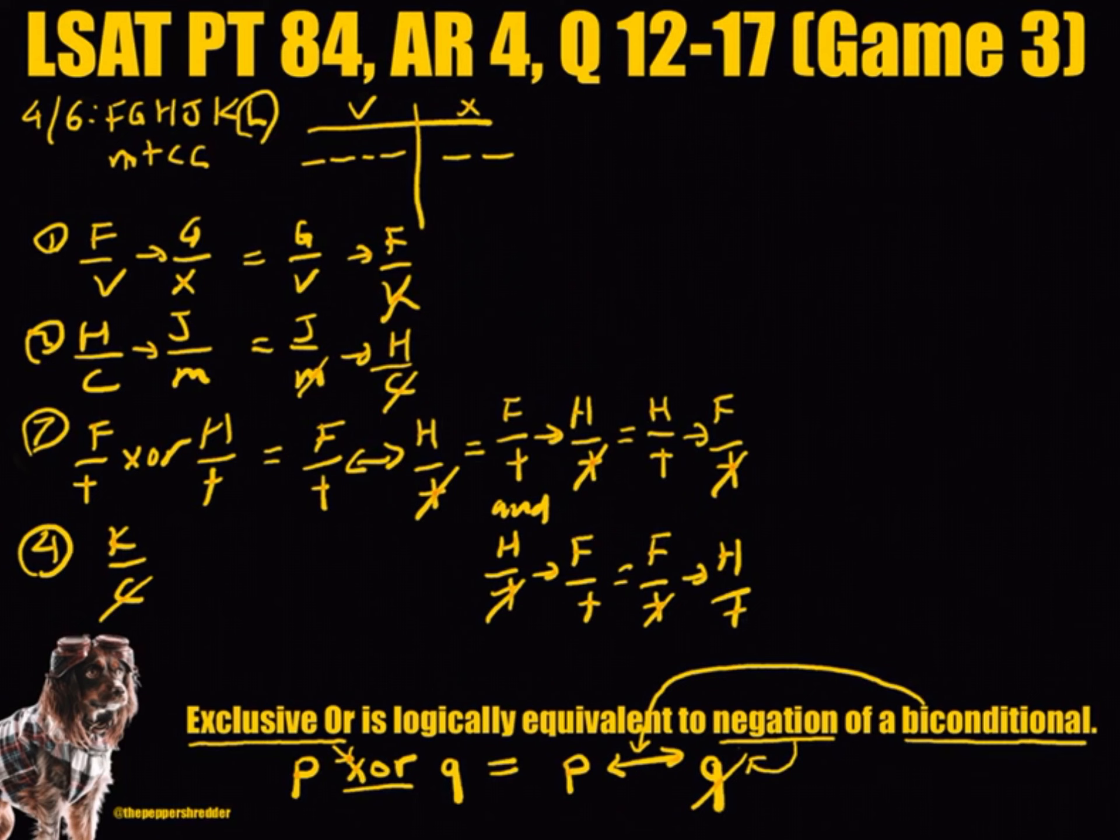Because F is mentioned in more than one rule, we can synthesize rules 1 and 3 to build a logic chain. First, we know from rule 3 that if F is grouped with T, then H must not be grouped with T. We also know that if H is not grouped with T, then F must be grouped with T. We can note this with a double-sided arrow.